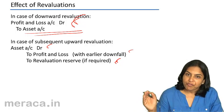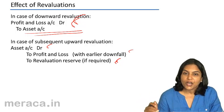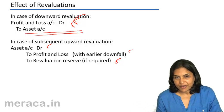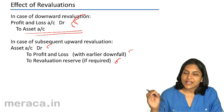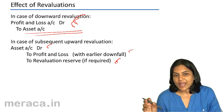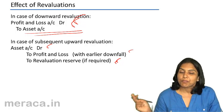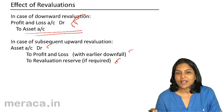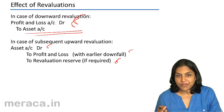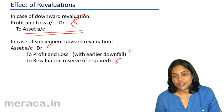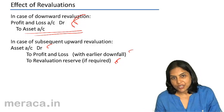Only after having done this — after a downward revaluation — if there is a subsequent upward revaluation, then asset account is debited to increase the value. Profit and loss account is credited to the extent of the amount that was previously undervalued, that is the previous downward revaluation shortfall, and the balance amount is credited to the revaluation reserve.